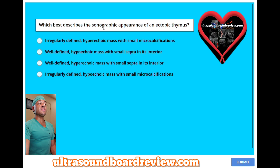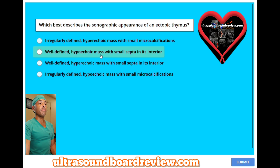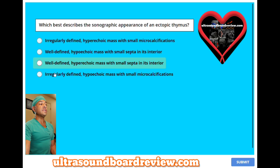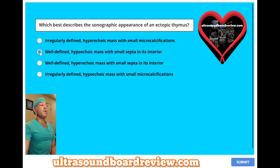Which best describes the sonographic appearance of an ectopic thymus? A, irregularly defined hypoechoic mass with small microcalcifications. B, well-defined hypoechoic mass with small septa in its interior. C, well-defined hypoechoic mass with small septa in its interior. Or D, irregularly defined hypoechoic mass with small microcalcifications? The answer is B, well-defined hypoechoic mass with small septa in its interior.